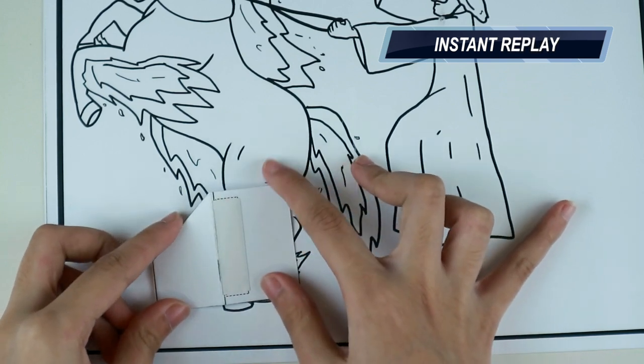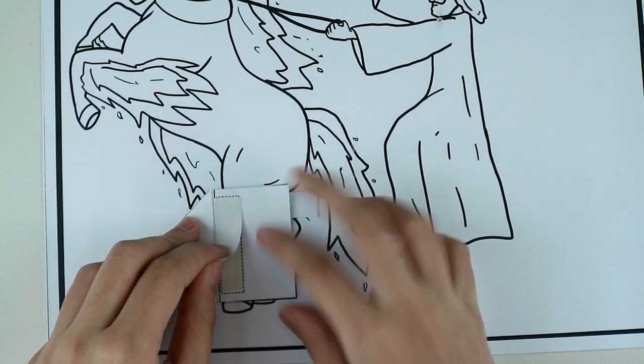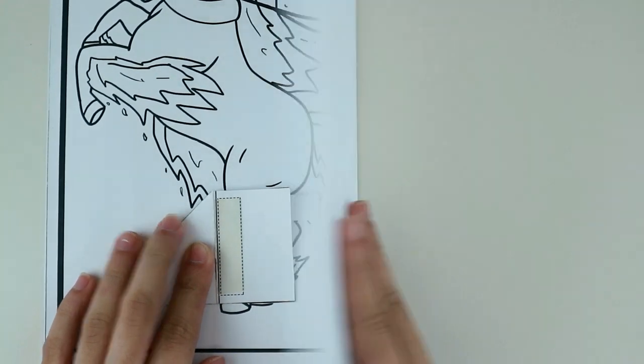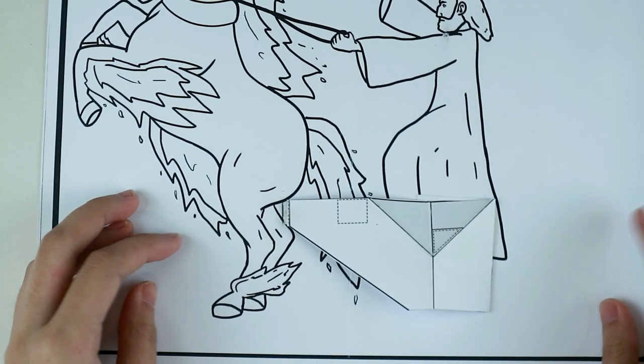Put some double-sided tape on the broken lined box of the other side. Then, remove the film and close the card. The pop-up card should look something like this.